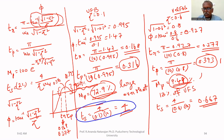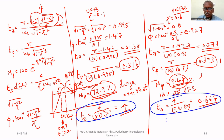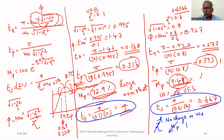So the advantages of velocity feedback are: no change in omega N, zeta is increased, percentage overshoot is decreased, and settling time is decreased. These are the advantages of velocity feedback.